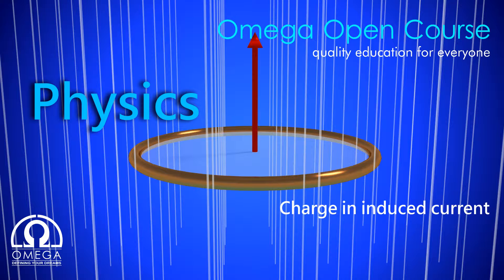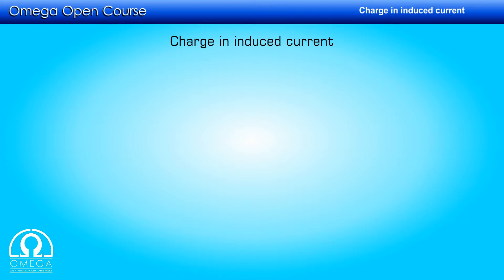In this video we will be discussing the charge flowing in induced current. We know that whenever magnetic flux changes in a conducting loop, some emf is induced in the loop. Because of that induced emf, some current will flow through the loop.